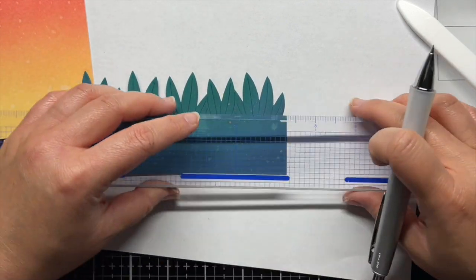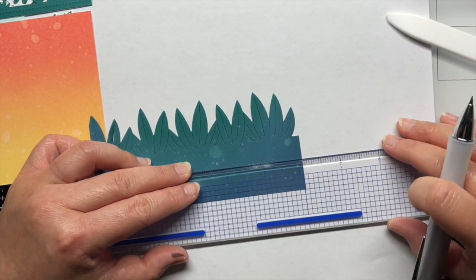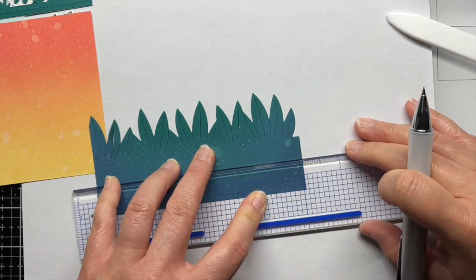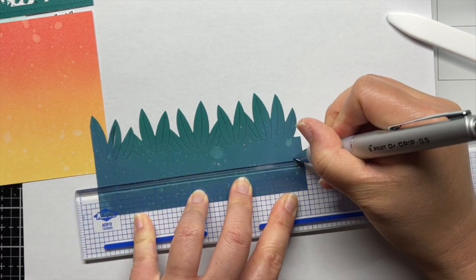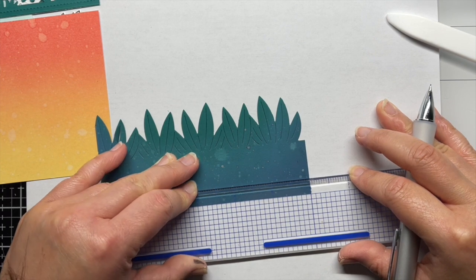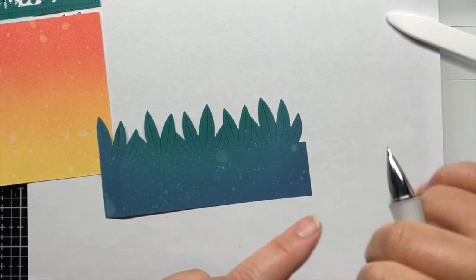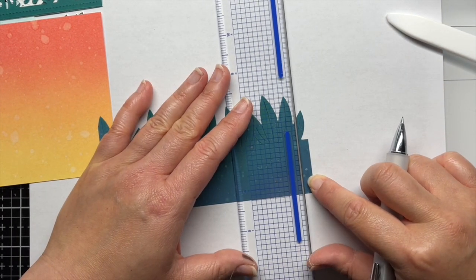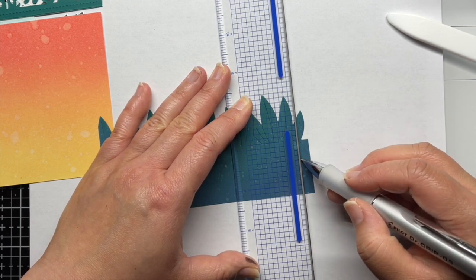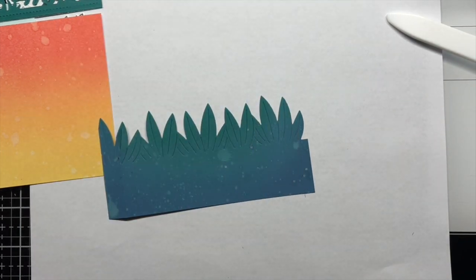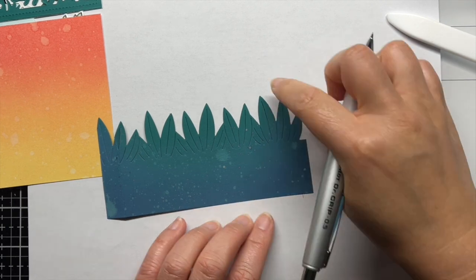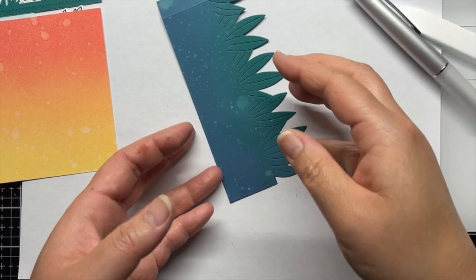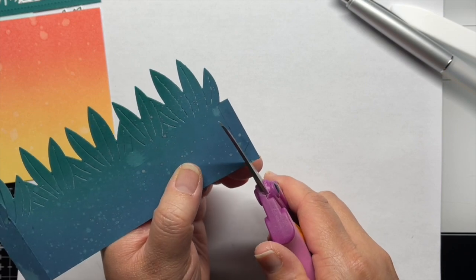Next, I take a ruler and mark a line a quarter inch from the right side of the rainforest cardstock border. I hand draw in lines to create a tab and then fussy cut them. Then I simply erase all my pencil marks.